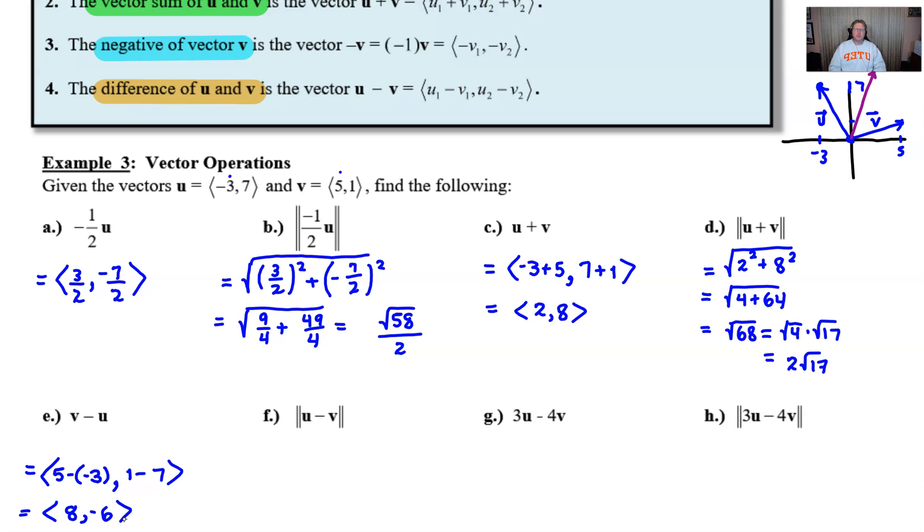For part f, now got to be a little careful here. I'm asking you to find the magnitude of u minus v. Oh, now, well wait a minute. I haven't even found the vector u minus v yet. Is it the same? Maybe it's just taking the square root of the sum of the squares of what we had in part e. Well, maybe. Let's go ahead and maybe find vector u minus vector v first. It probably won't take a lot of time. In fact, we'll do all the work in our heads here. Negative 3 minus 5 is negative 8, and then 7 minus 1 is going to be positive 6.